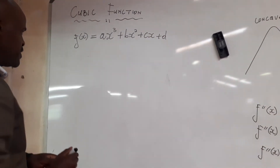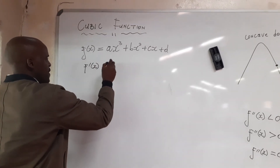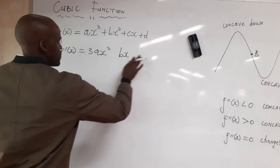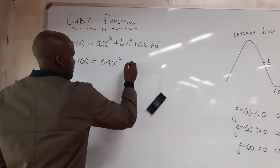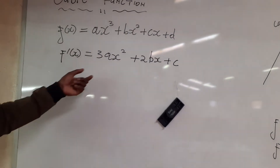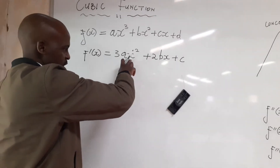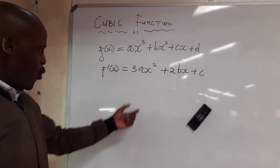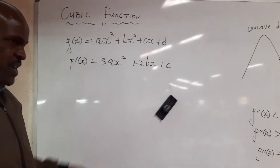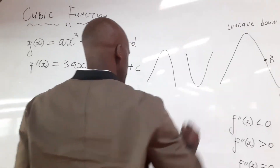Looking at our original equation f(x): to find a stationary point we differentiate to get the gradient, which is 3ax² + 2bx + c. We have x² in that expression. In grade 10 and 11 we call a function with x² a quadratic function, which means the first derivative of a cubic function gives us a quadratic function — it gives us a parabola. It can be either concave down or concave up depending on the value of a.